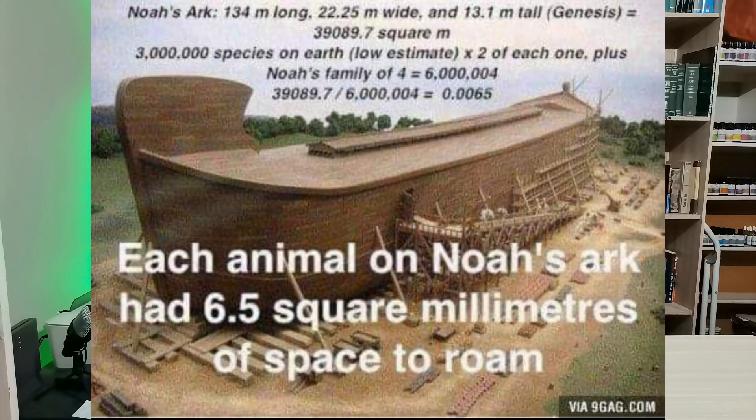On TikTok, Facebook, there are lots of groups always producing content that militates against Christianity. One of them is about Noah's Ark. The claim is there are 300,000 species — multiply that by two because Noah was to bring two of every kind of animal into the boat — so you had 600,000 animals in a boat, which doesn't leave them enough room to move around for a period of about a year.